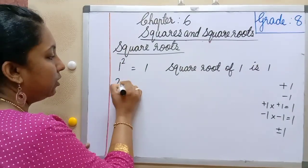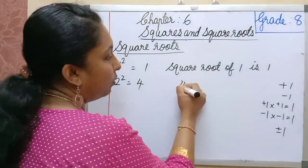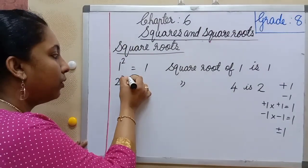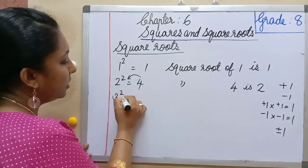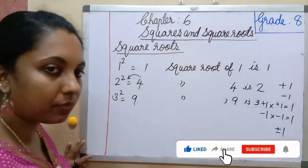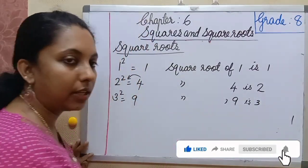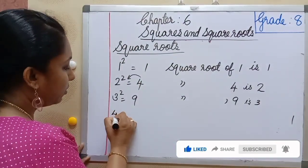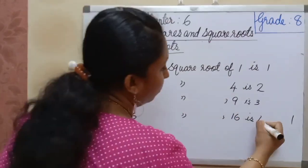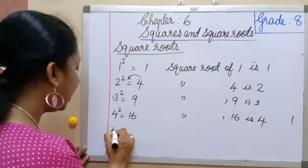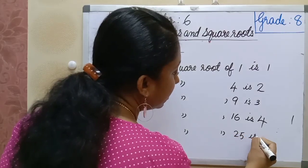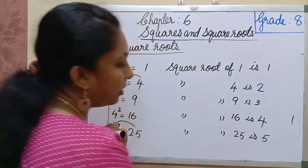In the same way, 2 squared is 4, so square root of 4 is 2. Then 3 squared is 9, so square root of 9 is 3 — actually plus or minus 3, but we take only the positive square root. And 5 squared is 25, so square root of 25 is 5.